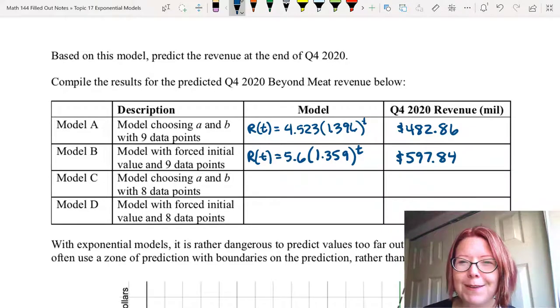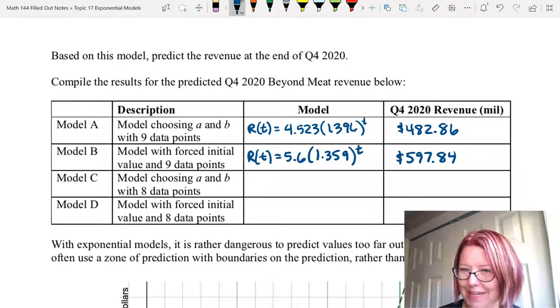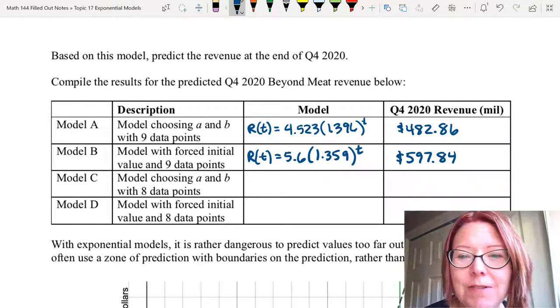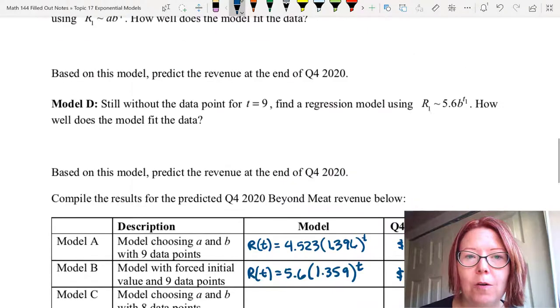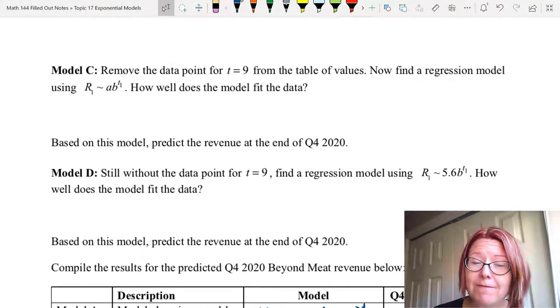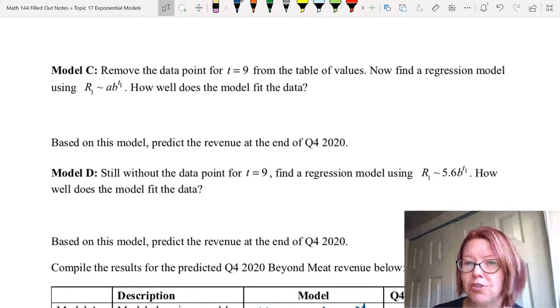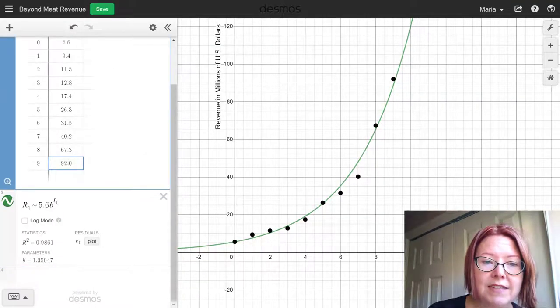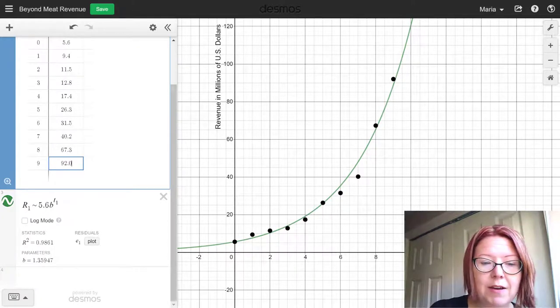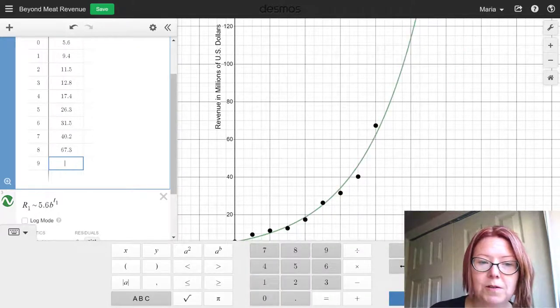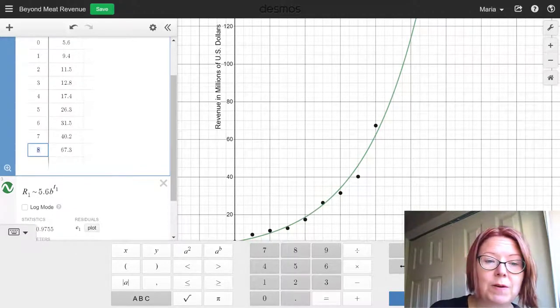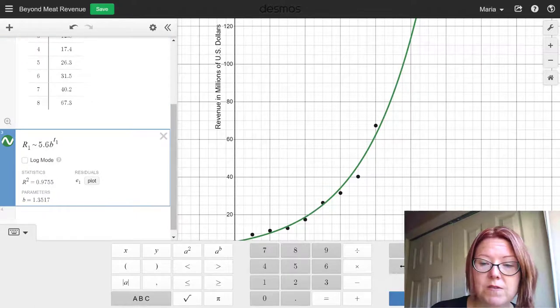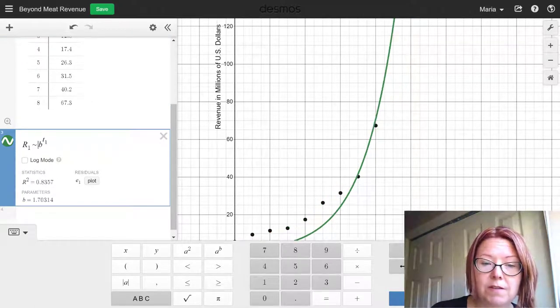Okay, now I thought we'd just experiment by using one less data point. And this is going to be a really interesting result, I think. So we're going to go back to our model and remove the data point for t equals 9 from the table of values. And then just do that original regression model of R1 tilde AB to the t1. So moving over to Desmos, I'm going to delete the last data point. So let's say we had made this model one quarter earlier with one quarter less data. So now we have eight data points. I'm also going to change my model back to using the lowercase a value instead of 5.6.